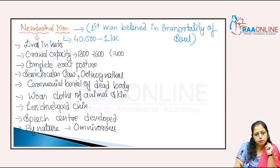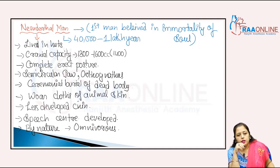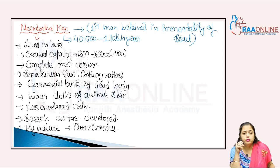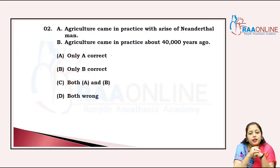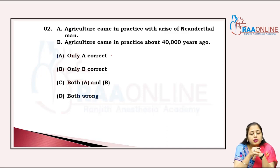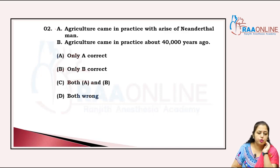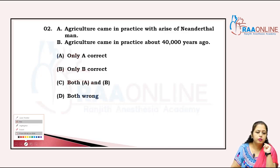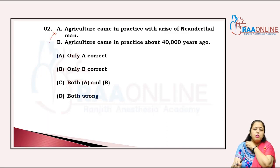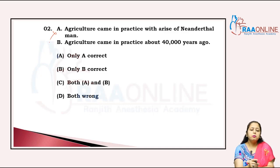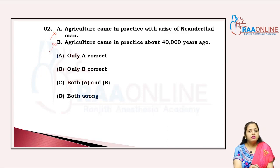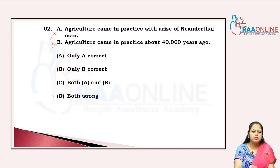These are the characteristic features of the Neanderthal man, whose origin and evolution is before 40,000 to 1 lakh years ago. As we know, agricultural practice was first done by Homo sapiens sapiens, that is the modern man. That is why the first statement is wrong. The second statement says agriculture came into practice about 40,000 years ago — that is also wrong; it came into practice about 10,000 years ago. Both options are wrong, so the answer is D.